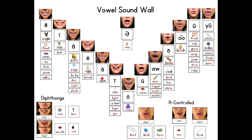Don't introduce all graphemes at once. Graphemes should be introduced following the sequence of phonics you follow. Keep graphemes that haven't been taught covered with paper. You can also wait to place graphemes on the wall until they are introduced.